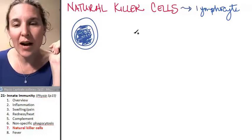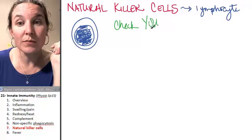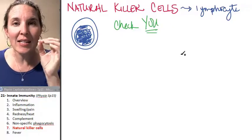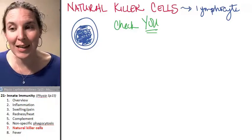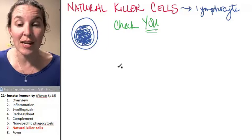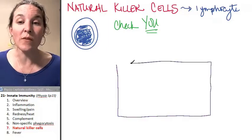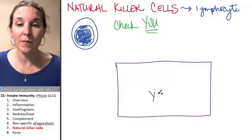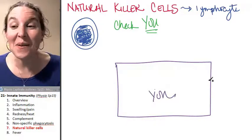They go around and they check you. So they look at the self cells, and here's the scoop. I'm going to give you just a little heads up. We're going to have an entire section on this in the next lecture on the acquired immune response, but this is one of your cells and I'm so excited about this.